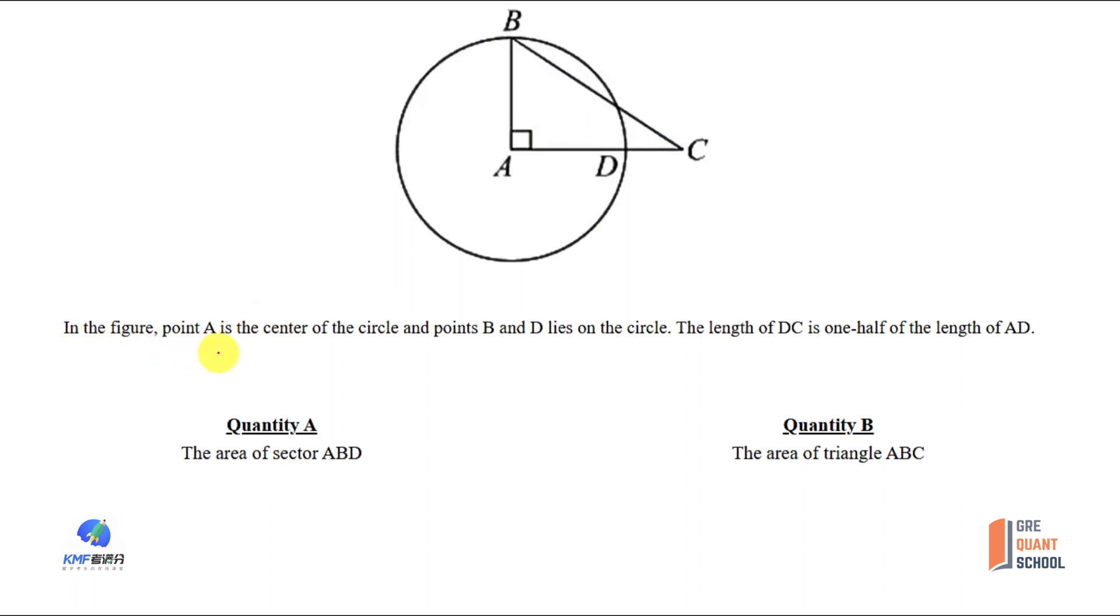In the figure, point A is the center of the circle and points B and D lie on the circle. The length of DC is one-half of the length of AD.